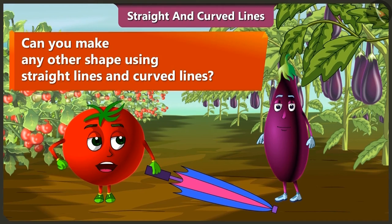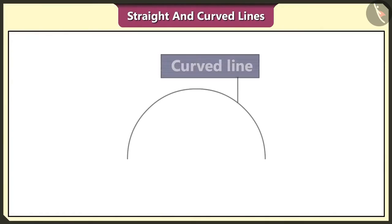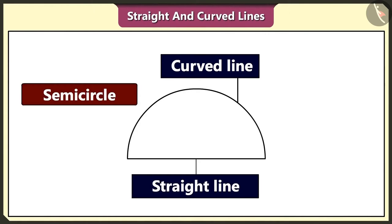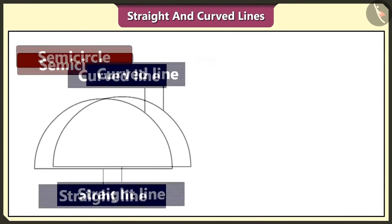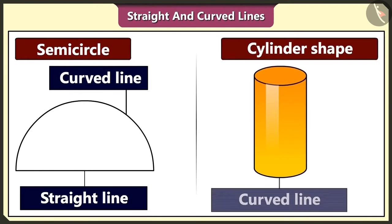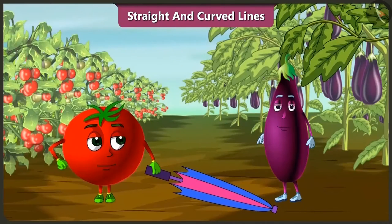Yes! Using a curved line and a straight line, we can make a semicircle like this. And a cylinder shape is also made using curved and straight lines. They had so much fun and enjoyed the rain too!